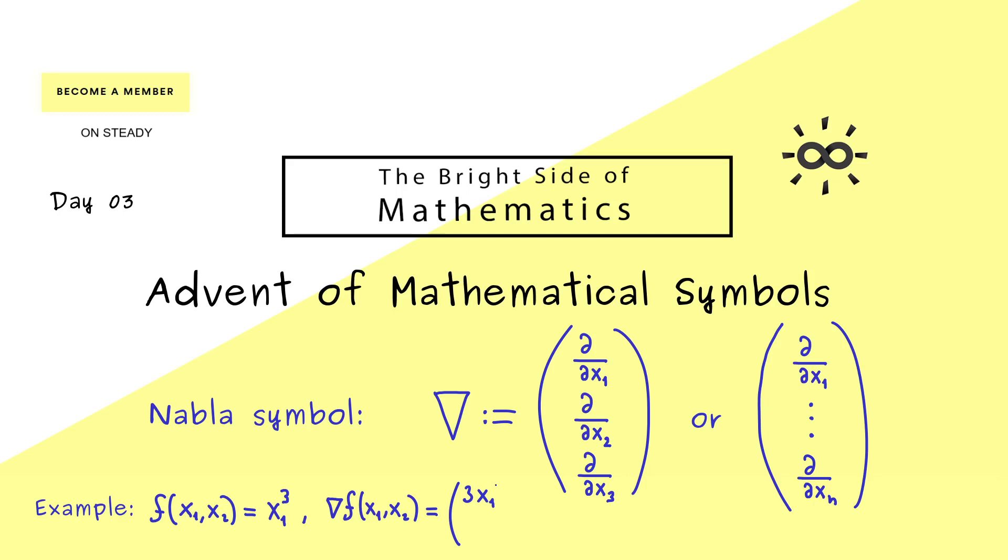In the first one we find the partial derivative with respect to x1, which means we have 3x1 squared. And in the second component we have the partial derivative with respect to x2, which is zero. So this is the nabla symbol, also often called the nabla operator. Thanks for listening.